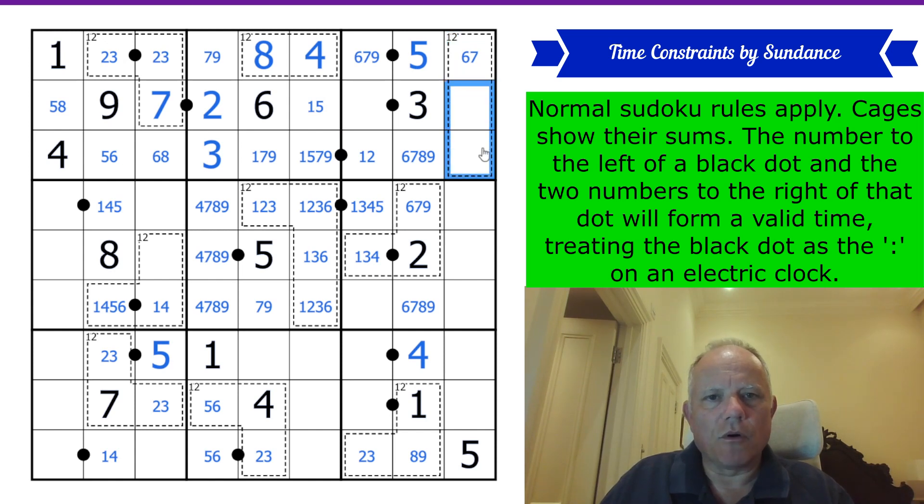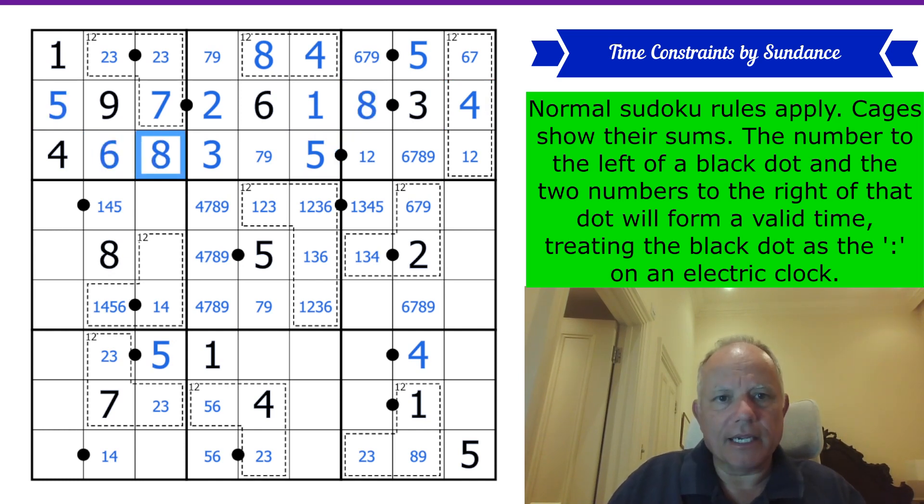So it always has a 4, which is quite interesting. That gives me a 1, 2 pair in the row below. That gives me a 7, 9 pair here. So now I can do 1 and 5. I think that might actually be the key. 1 can't be there now. So we can place it in the first 12 cage we started with.